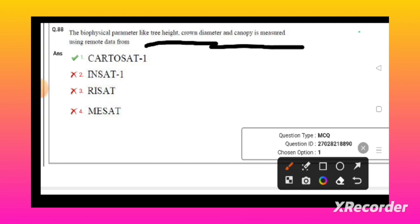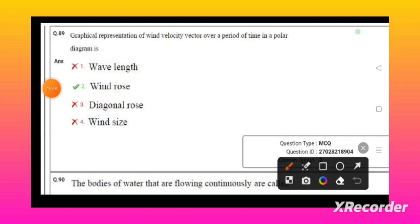Geographical representation of wind velocity vector over a period of time in the polar diagram is wind rose. The bodies of water that are flowing continuously is called lotic water bodies, and there are lentic water bodies - they are still water bodies.